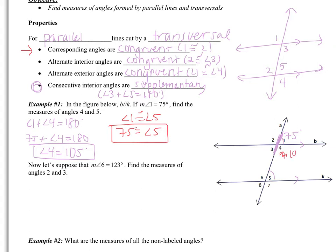So angle 4 is 105 and angle 5 is 75. As a way to check: angles 4 and 5 are consecutive interior angles — they're inside the lines and both to the right of the transversal. Consecutive interior angles are supplementary, and indeed 105 plus 75 equals 180.